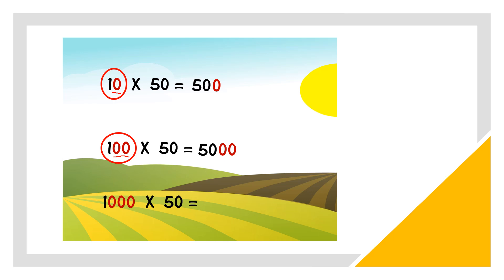Next one, 1,000 times 50. Circle 1,000. Copy back 50. After that, look at 1,000. We have 1, 2, 3 zeros. So we add 3 zeros at the back.